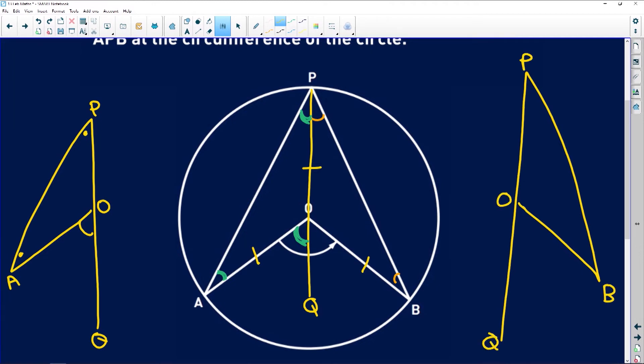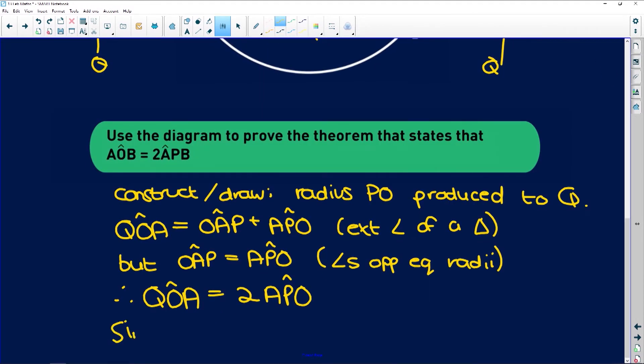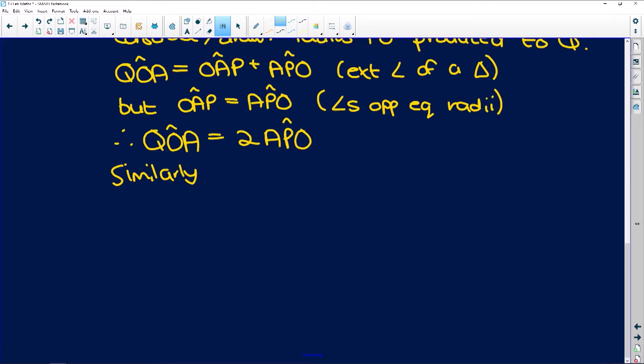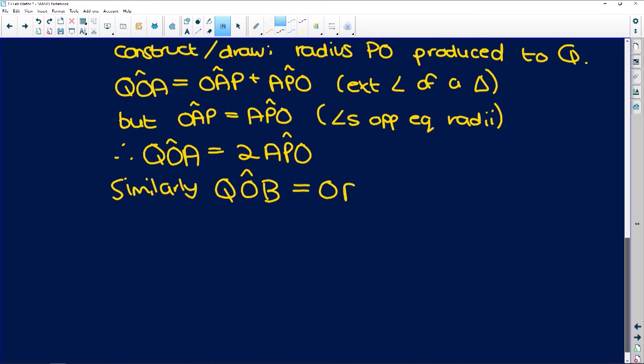O at the center. And this is Q that we've extended to. This angle over here, QOB is equal to OPB. Similarly, QOB, which is the angle outside the triangle, is equal to OPB plus PBO. Exterior angle of a triangle.